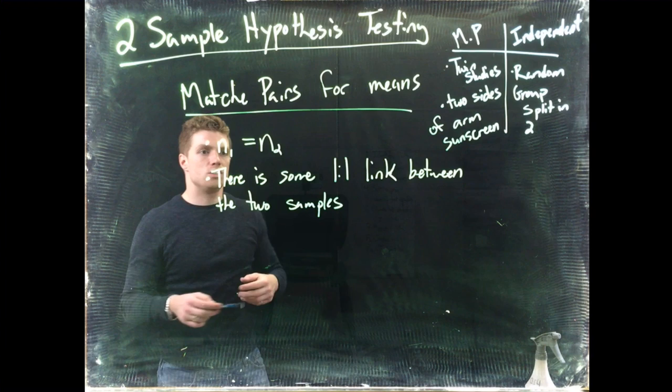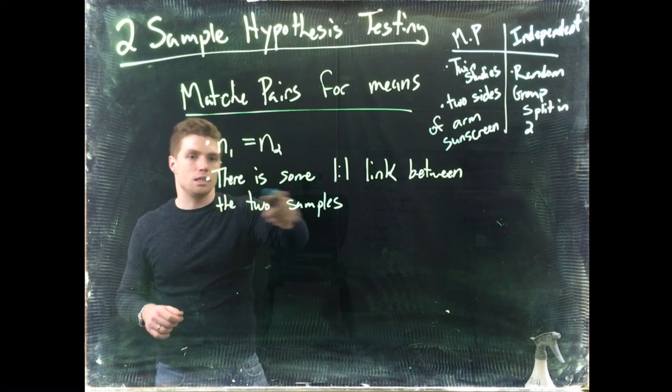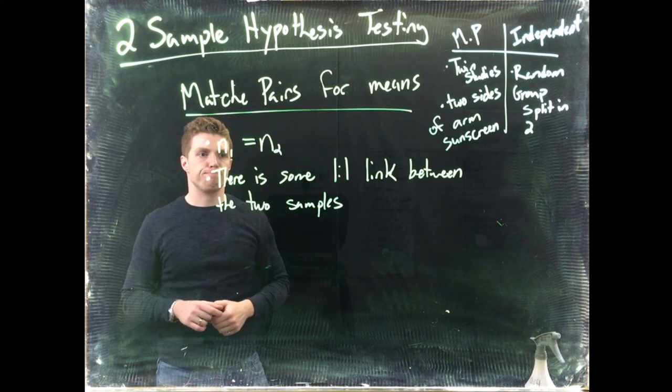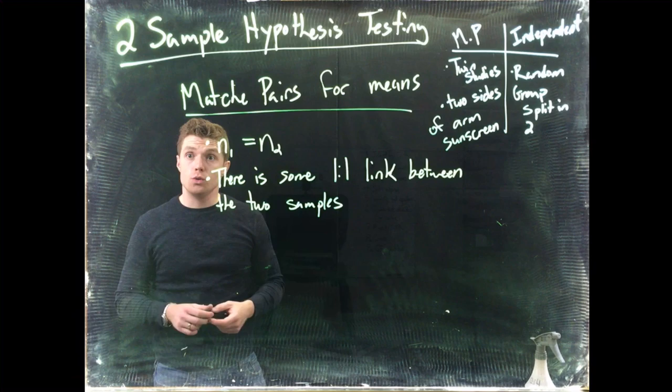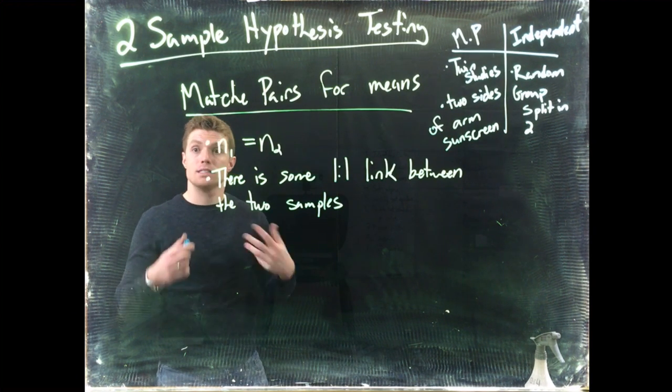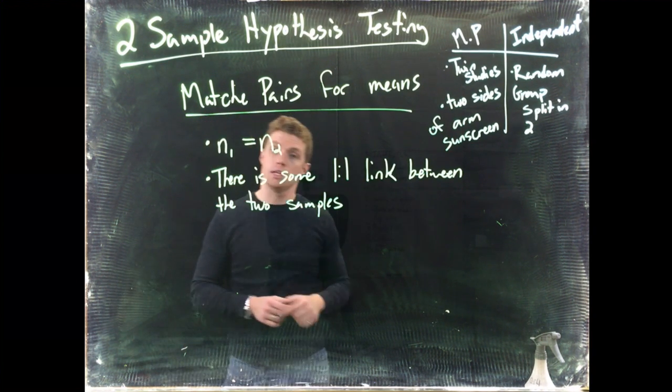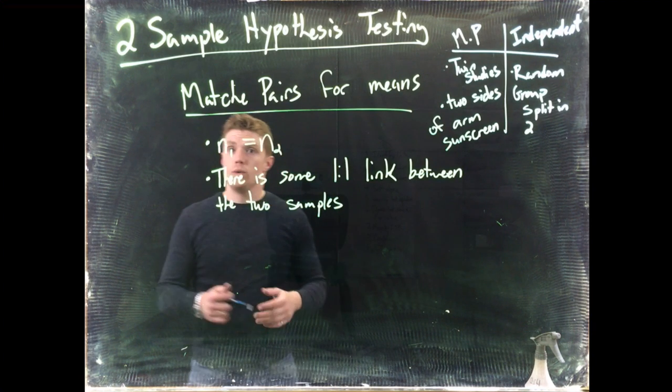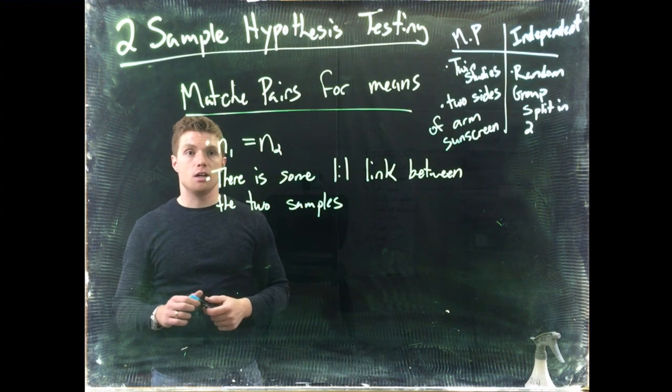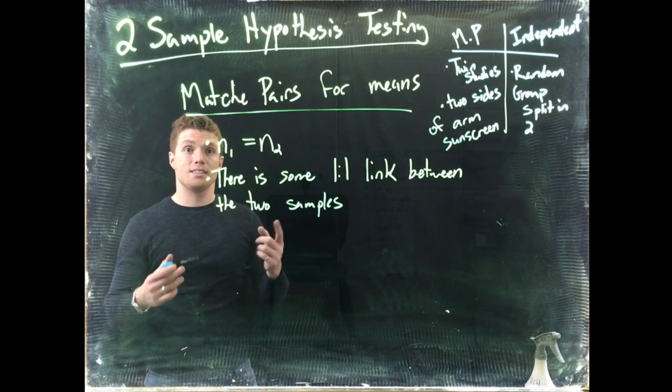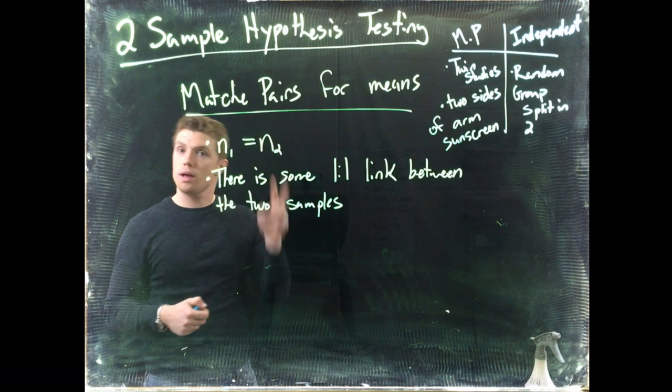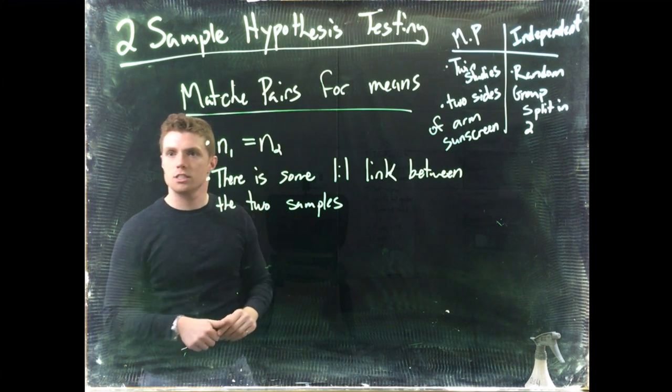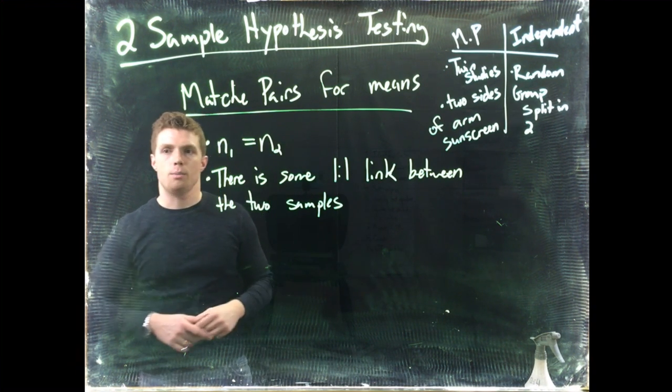For matched pairs, it has to be, we've got to have this one-to-one and then we still have to have this link between the samples. When we do this too, we still need to make sure that our sample sizes are large enough or the original population is normally distributed. So we still have to satisfy the demands of our central limit theorem.